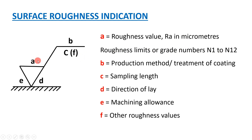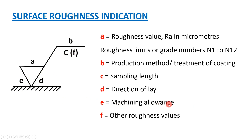Compartment 'b' is the production method, for example milling. Compartment 'c' is the sampling length — the length over which surface finish is measured. Compartment 'd' is the direction of the lay. Compartment 'e' is the machining allowance. Compartment 'f' is for any additional roughness value if required.